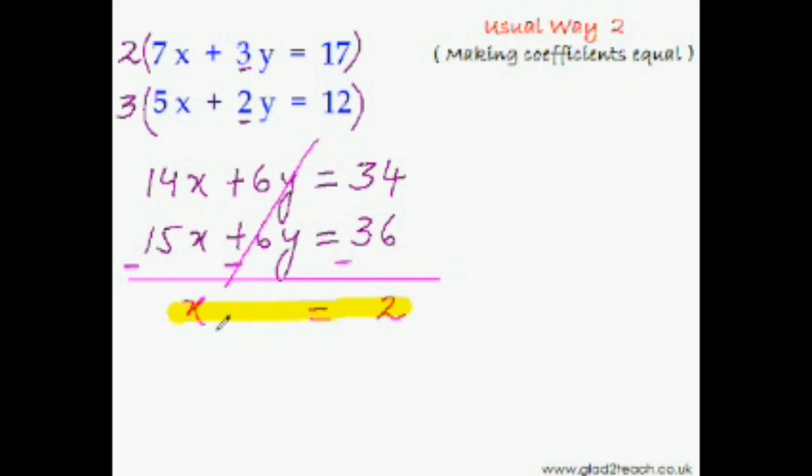Now, once you have the value of one variable, finding the value of the other variable is very easy, and it is more or less the same in every method. Just put this value of x in any of these two equations. I will prefer this one. So 5 times 2 is 10. 10 plus 2y is equal to 12. So that means 2y equals 12 minus 10, which is nothing but 2, and y equals 1.